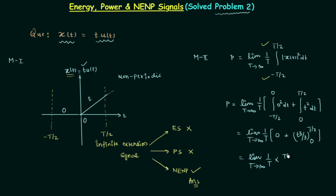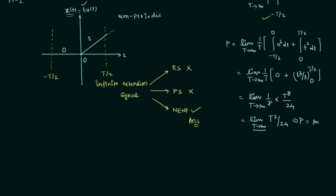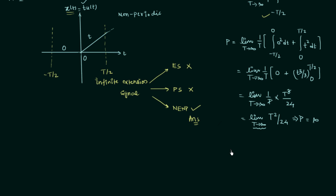Simplifying: limit T→∞ of (1/T) × (T³/24) = limit T→∞ of T²/24. When T tends to infinity, the average power P equals infinity. When average power P is infinity, the signal is neither energy nor power signal — because for energy signals P = 0, and for power signals P is finite, but here P equals infinity.